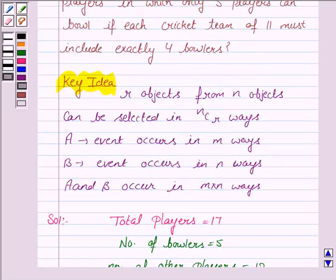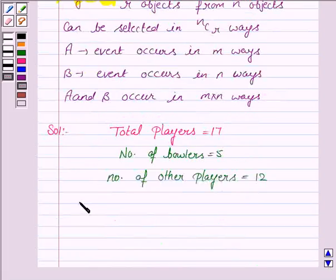Now, we have to select a team of 11 players which consists of 4 bowlers and 7 other players. The number of ways to select 4 bowlers